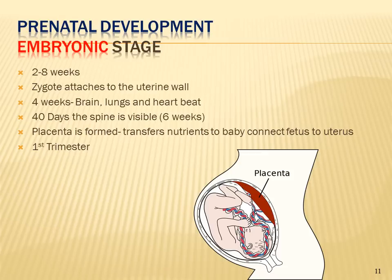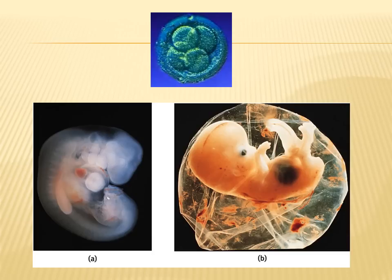Here are some pictures of the embryonic stage. You can see the cell dividing — the zygote creating all those cells. At about four weeks it resembles a small sea creature as the spine forms. Toward the end, foot structures and head structures are built, and a heartbeat is present.